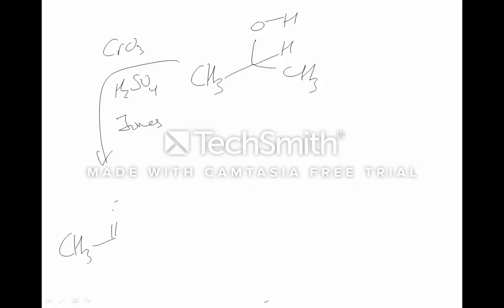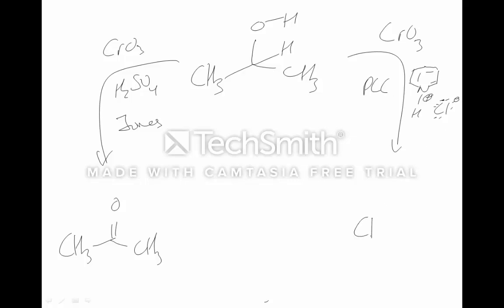Now let's look at the same conditions for a secondary alcohol. Jones — harsh conditions — gives a ketone. PCC also gives a ketone. For secondary alcohols it's irrelevant which reagent you use, because there's only one hydrogen next to the oxygen, so you're going to get a ketone either way.